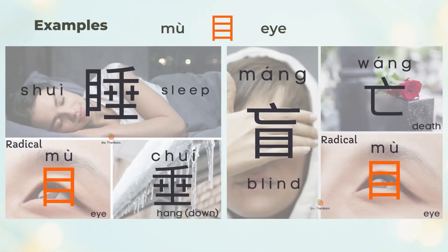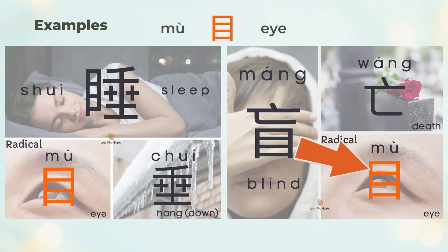睡 means to sleep. 睡 is the left 目 (eye) and the right 垂 (to hang down). When you hang down your eyelids, you fall asleep. 盲 means blind. The upper part is 亡 (death) and the lower part is 目 (eye), relating eyes to blindness.